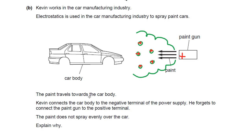So, the paint travels towards the car body. Kevin connects the car body to the negative terminal of the power supply. He forgets to connect the paint gun to the positive terminal. They've given you more information — they're also saying that the car is charged negatively in this case. The paint does not spray evenly over the car, and you need to explain why. Think about the few things I've just said. Pause the video and have a little go, and then I'll scroll down and tell you what you should have written. This is a four mark question.